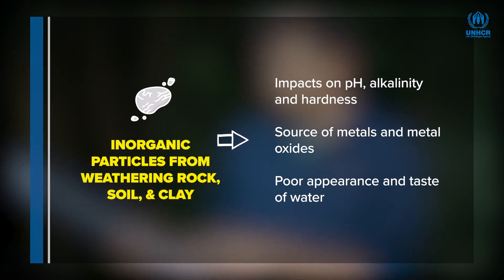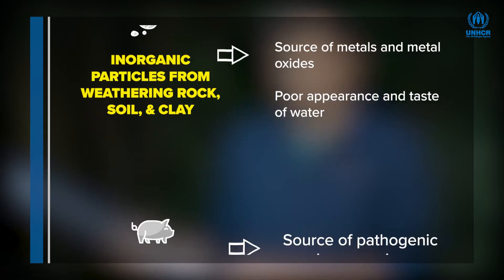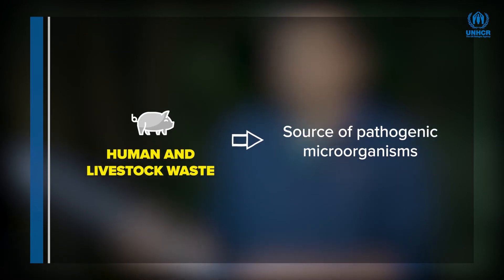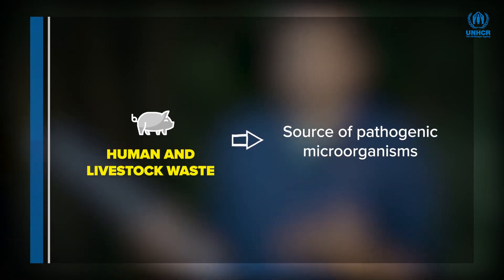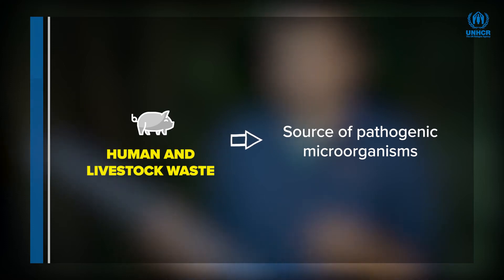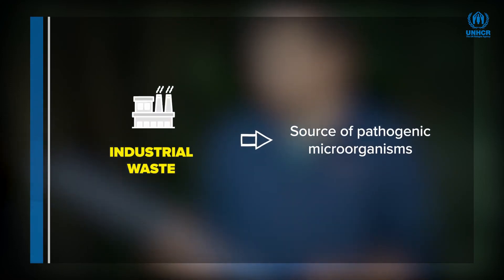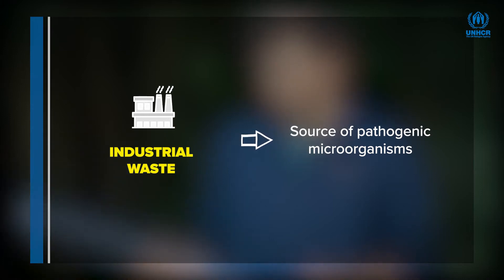However, turbidity can also indicate the presence of hazardous chemical and microbial contaminants and can have significant implications for water quality, human health, or user acceptance. The implications will vary depending on the characteristics of the turbidity.